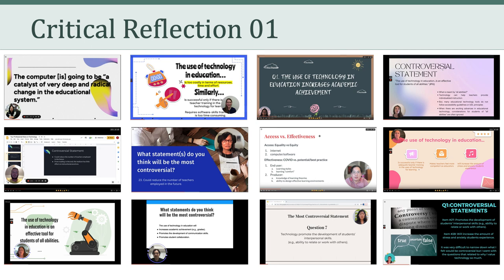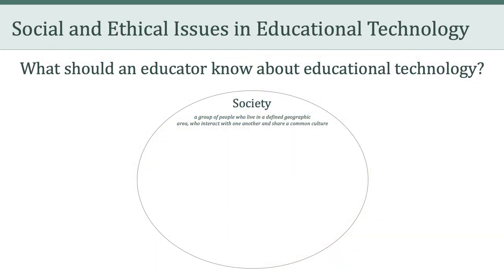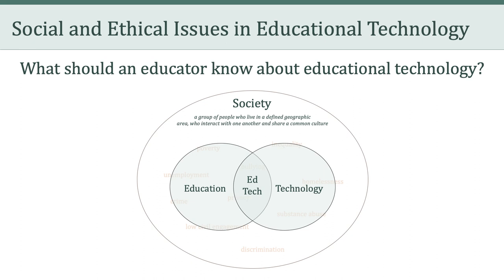We'll talk more about the Professional Views on Technology questionnaire toward the end of the video. When we left off last week, we were talking about what an educator should know about educational technology. To help frame that discussion, we talked about society as a group of people who live in a defined geographic area and who interact with one another and share a common culture. We also talked about a number of social ills or social problems, such as poverty, privacy, inequality, and discrimination, and how certain institutions or initiatives such as education and technology have been created and maintained to help address some of these problems.